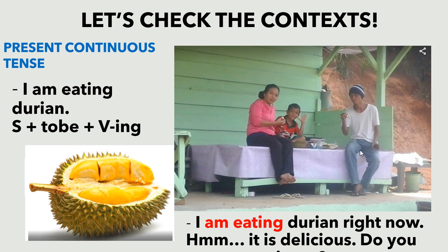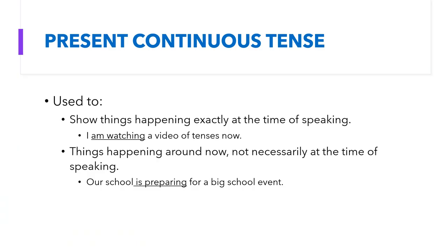Present continuous tense: 'I am eating durian.' Context: 'I am eating durian right now. It is delicious. Do you want to try it too?' Present continuous tense is used to show things happening exactly at the time of speaking. For example, 'I am watching a video of tenses now.'